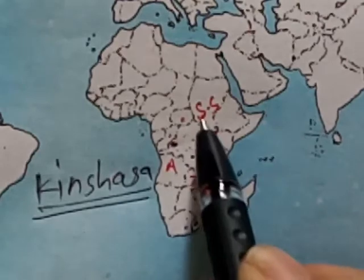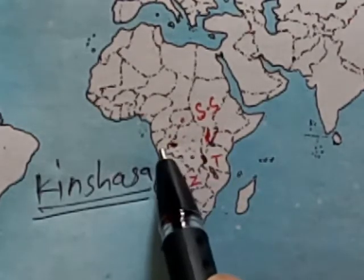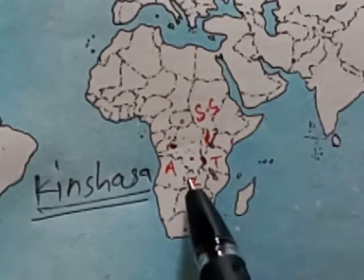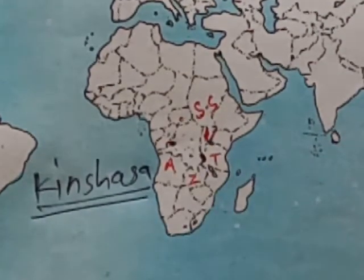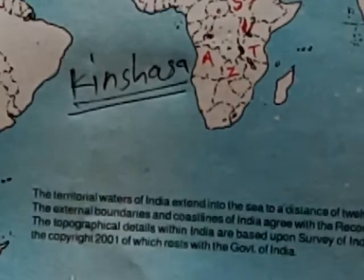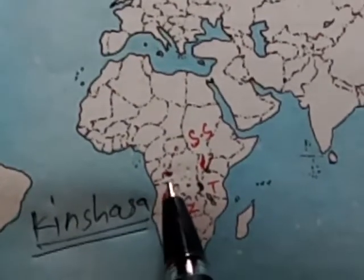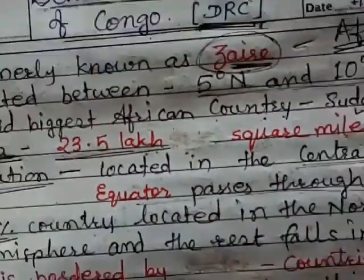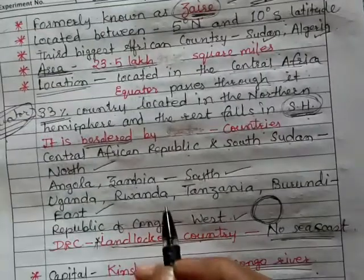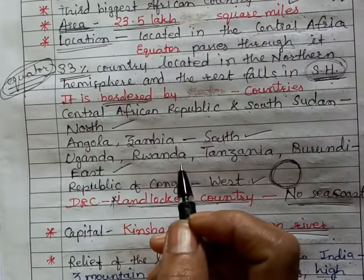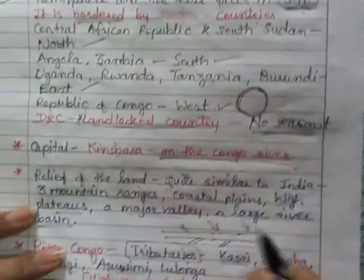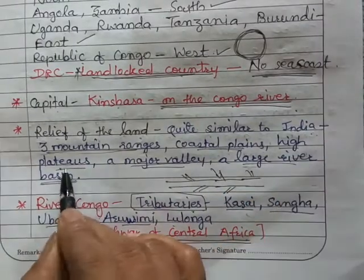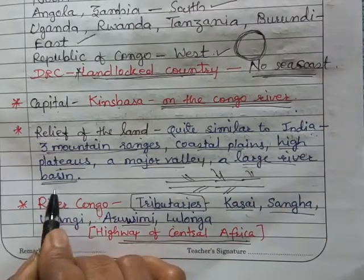There is no coastal area, which is why it is known as a landlocked country — it is bordered on all sides by land with no sea or ocean water around it. It has no sea coast, and Kinshasa is located on the banks of the River Congo. As for relief features, it has mountain ranges, coastal plains, a high plateau, a major valley, and a large river basin.